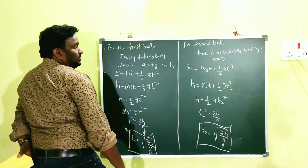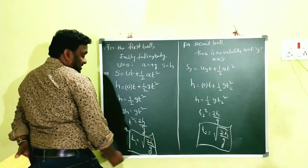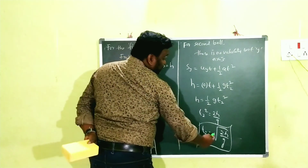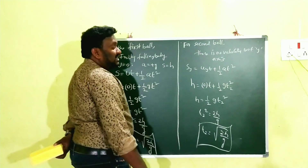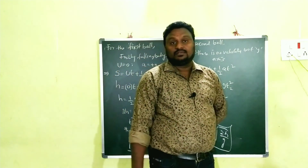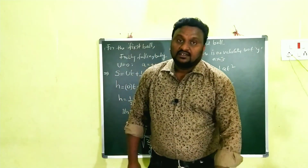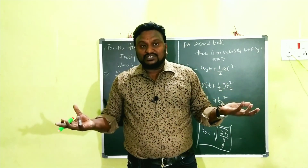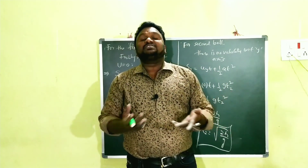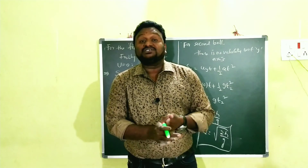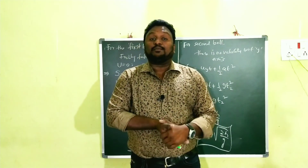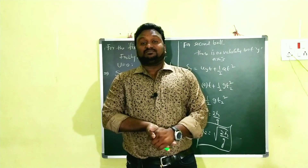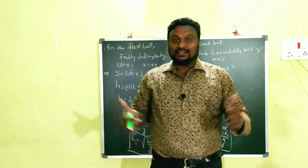So t₁ = √(2H/g) and t₂ = √(2H/g). Therefore, both objects reach the ground within the same time, because both are acted upon by the same gravitational force. Okay bye, take care!